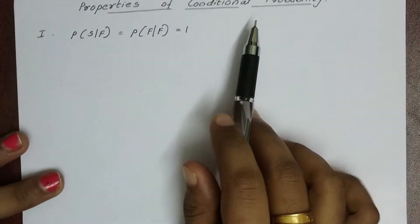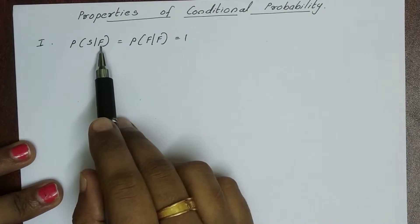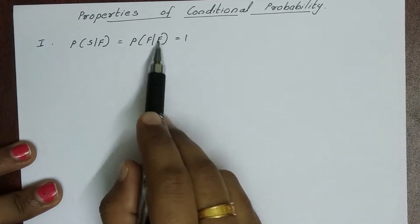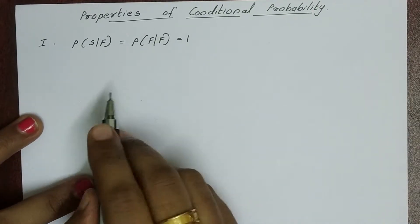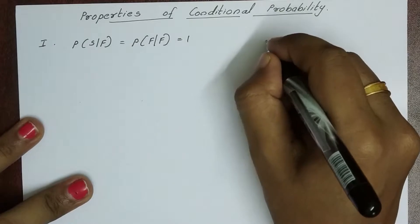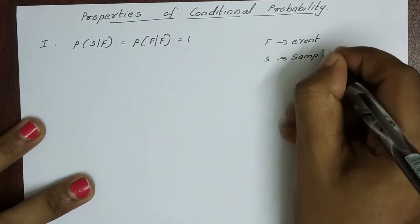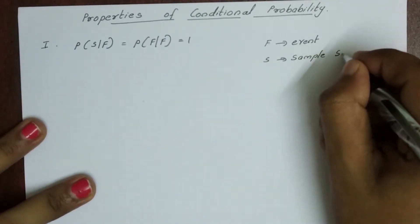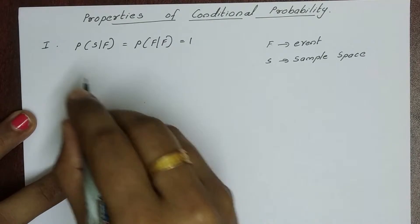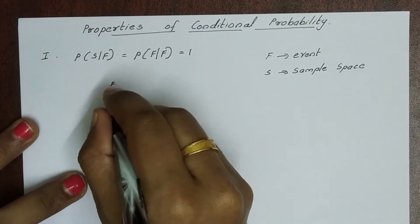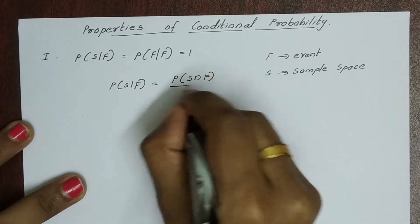Hi friends, conditional probability — day properties. First property: probability of S given F has already happened is equal to 1. Similarly, probability of F given F has already happened is equal to 1. Here F is an event and S is the sample space of an experiment. The formula is: probability of S given F equals probability of S intersection F divided by probability of F.